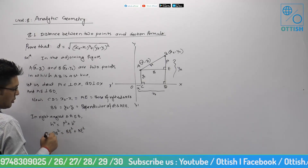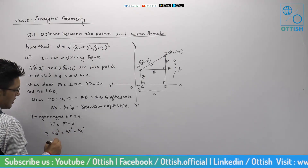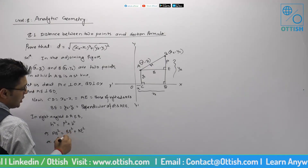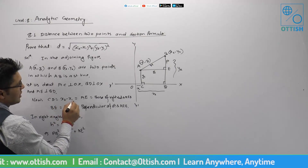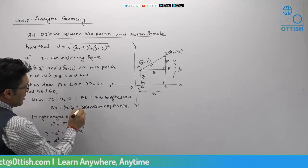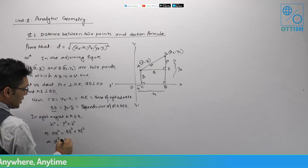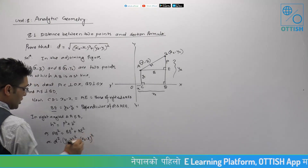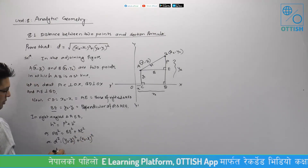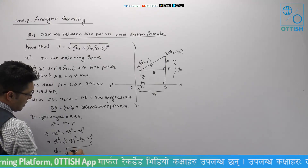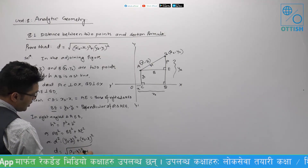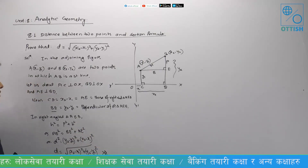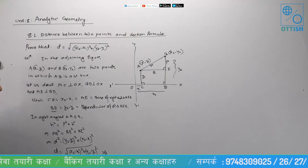We have AB as the distance d. So d squared is equal to BE squared plus AE squared, that is (y2 minus y1) whole squared plus (x2 minus x1) whole squared. Therefore, the distance formula: d equals the square root of (x2 minus x1) whole squared plus (y2 minus y1) whole squared. This is the derivation of the distance between any two points.